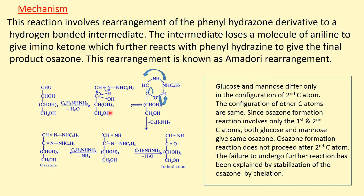This hydrazone derivative undergoes a rearrangement known as the Amadori rearrangement, by which a hydrogen-bonded intermediate is formed. In this rearrangement, the carbon-hydrogen bond breaks down, a carbon-carbon double bond is formed, the pi-bonded electrons shift to nitrogen, H-plus goes to nitrogen, and finally this intermediate is formed, which is stabilized by hydrogen bonding. From this intermediate, one molecule of aniline is removed to form the iminoketone, and this iminoketone when it reacts with excess phenylhydrazine, finally forms osazone.